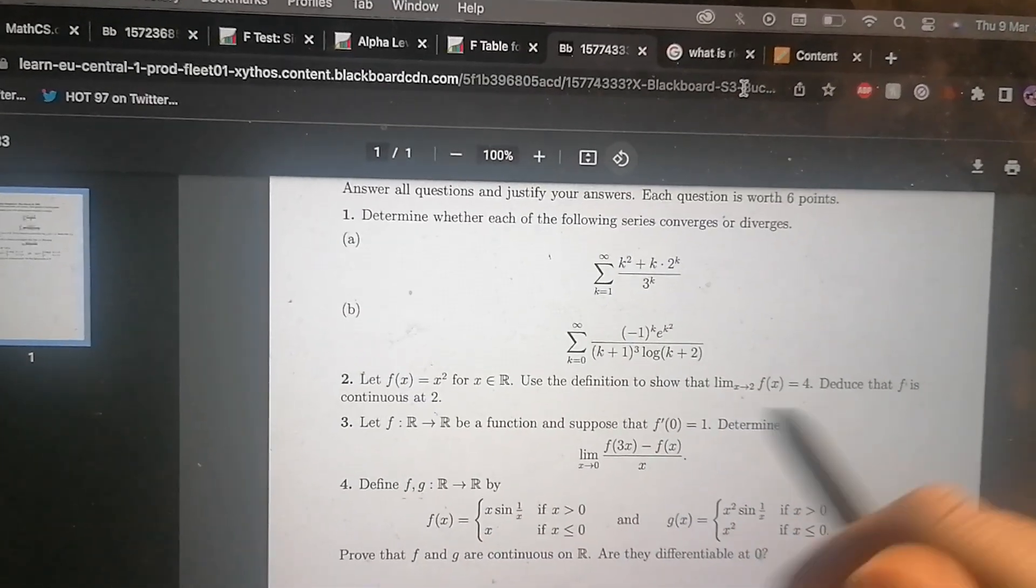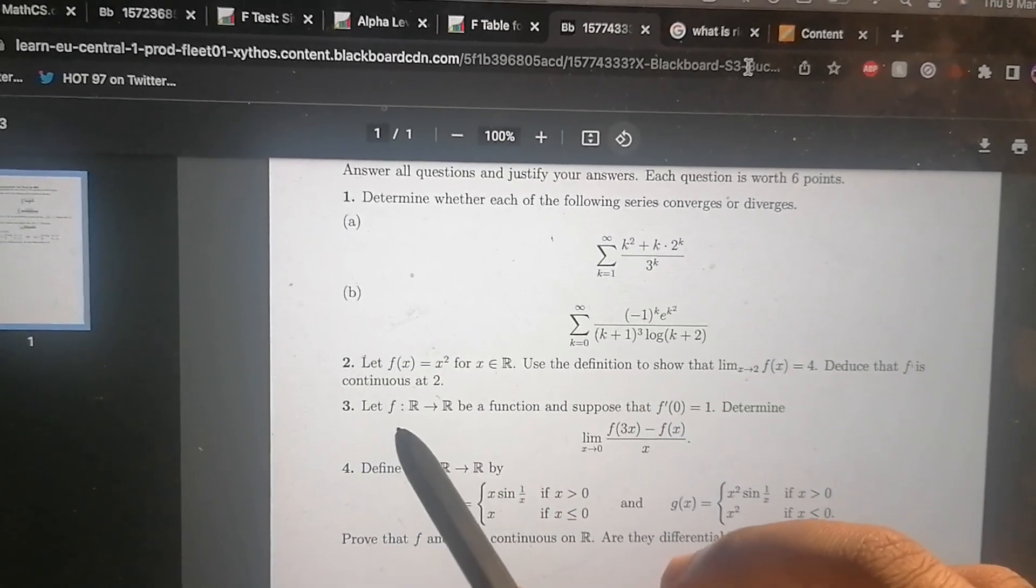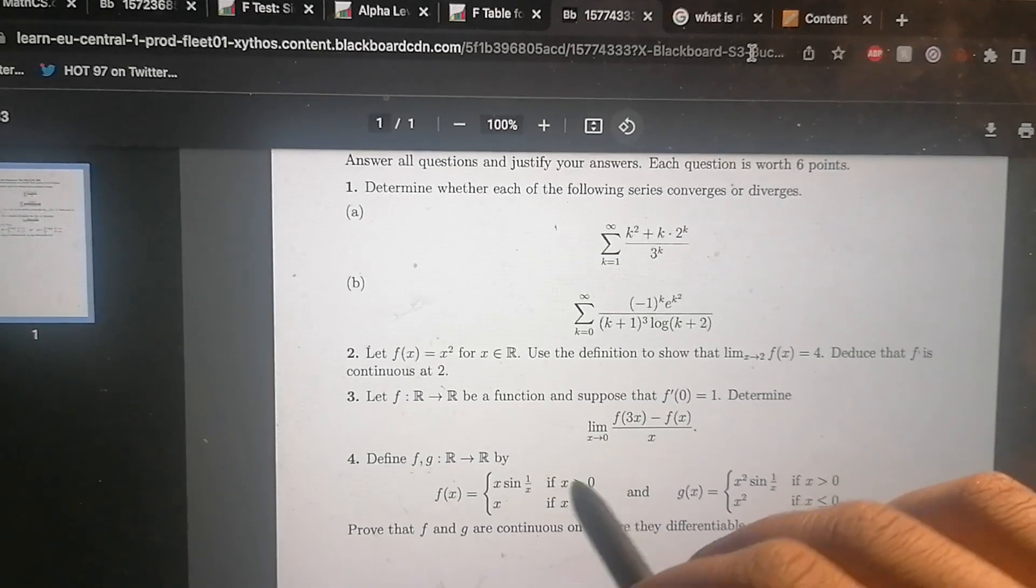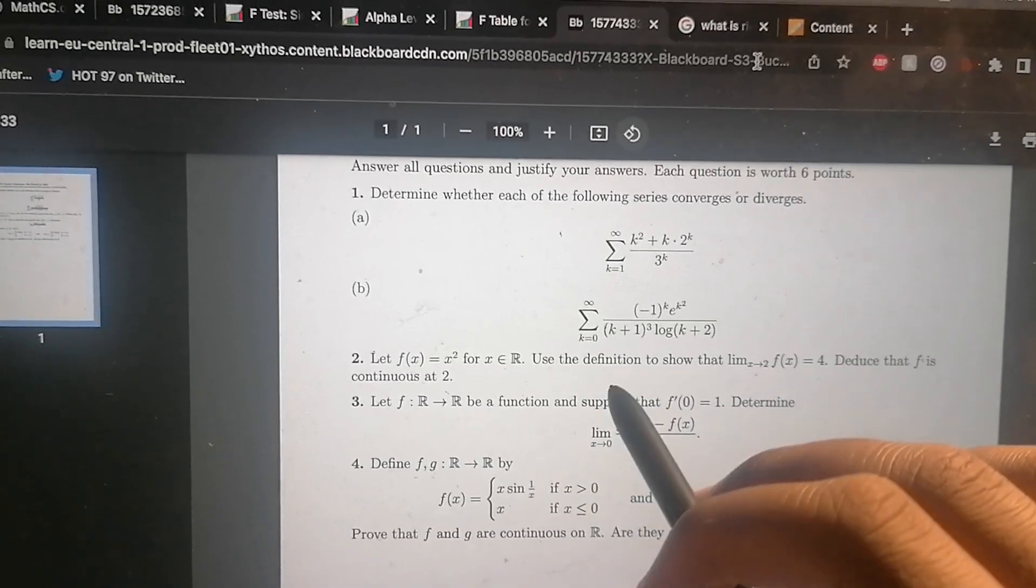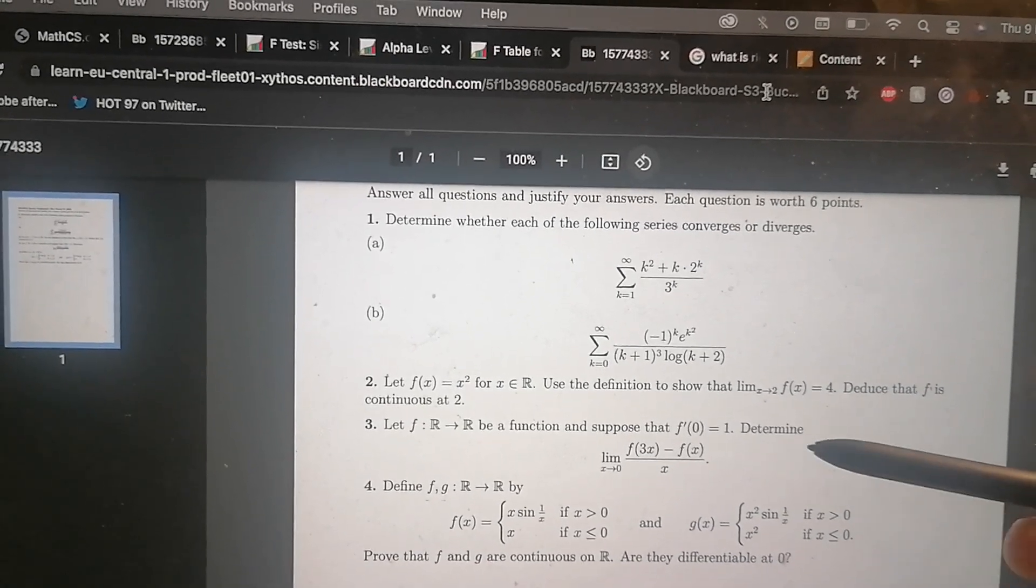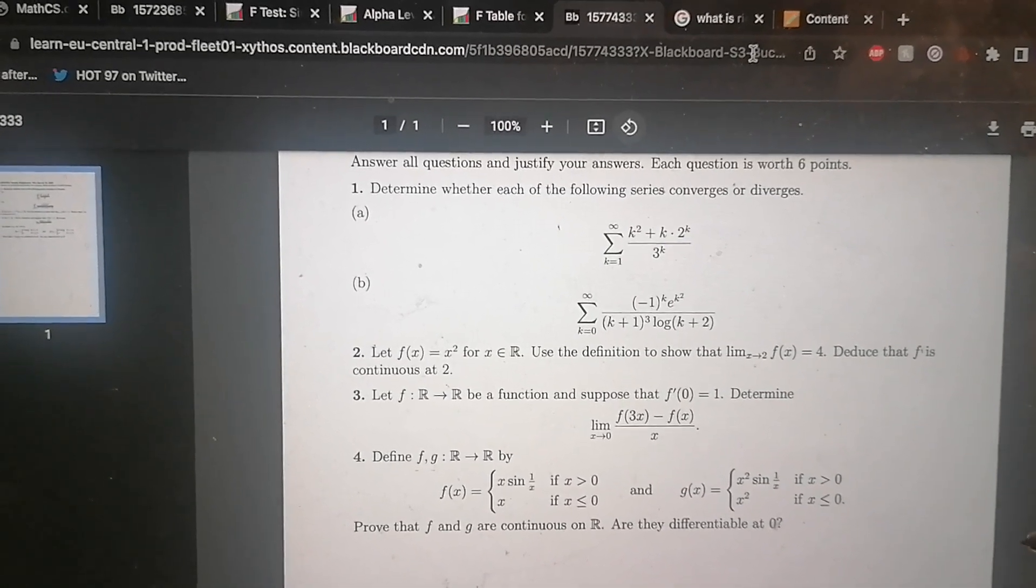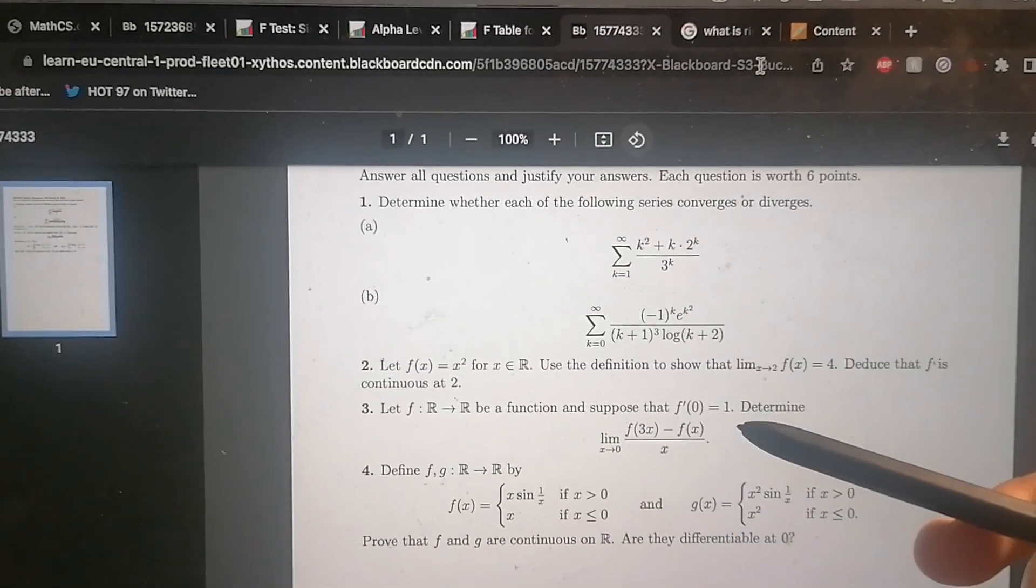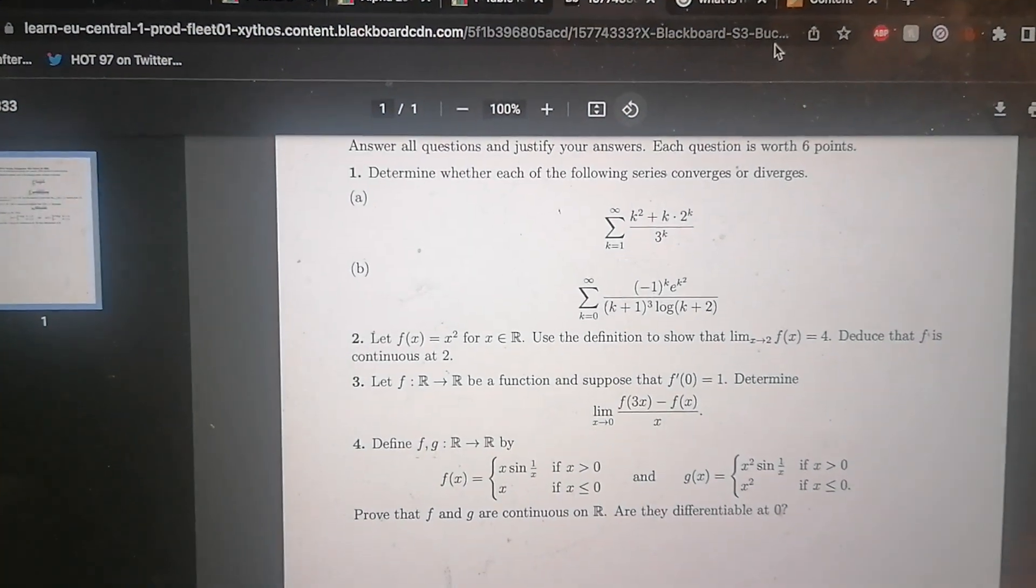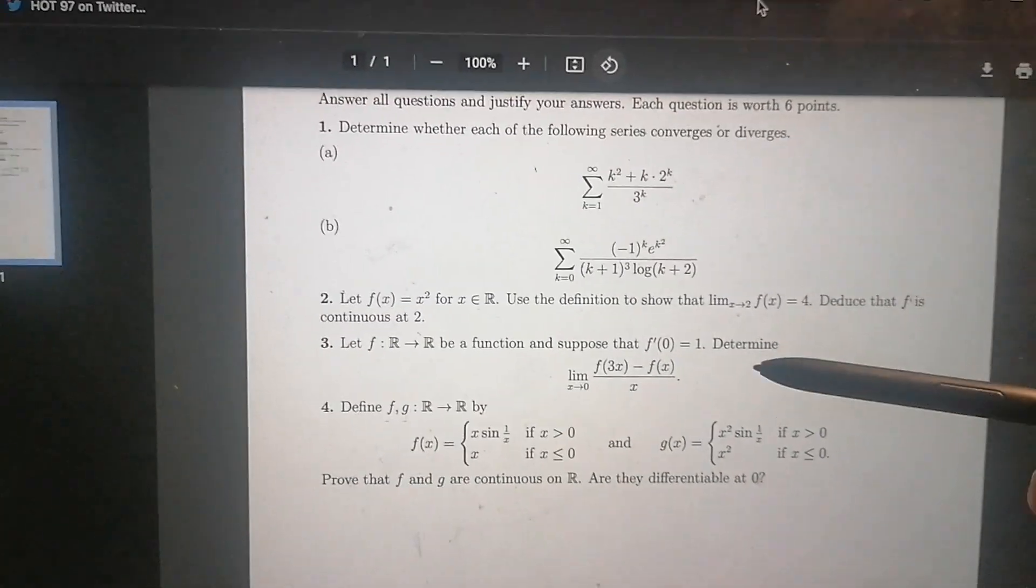Question three - suppose that f maps real numbers to real numbers and is a function, suppose that f dash of zero equals one, determine that limit there. When I first looked at this, I thought to myself I don't exactly know how to start. I looked here for a good five minutes. It does look similar to the differentiation definition kind of, but that's just a hunch. To me that's the hardest question in all of this.